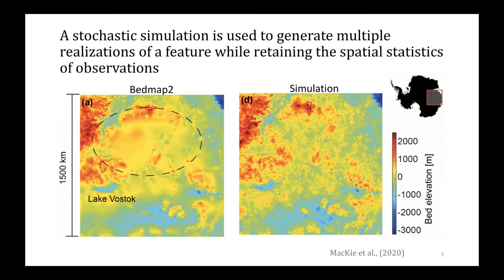So let me introduce you to the idea of stochastic simulation. A stochastic simulation is used to generate multiple realizations of a feature while retaining the spatial statistics of observations. The ability of this approach to capture the heterogeneity is an important advantage for many subsurface problems. For example, stochastic simulation is often used in modeling groundwater hydrology because the subsurface heterogeneity has an important control on water flow. This makes it a promising tool for ice sheet applications.